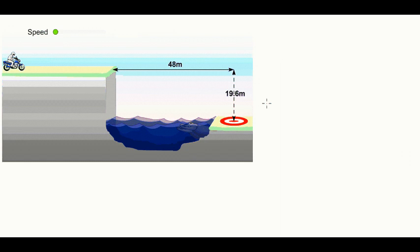In this Vizcast you'll learn how to solve a basic projectile motion problem. This would be worth a merit in NCEA. The idea is we have a motorcyclist here and we want to determine the speed, the horizontal speed that is required for the motorcyclist to hit the target over here.